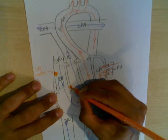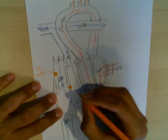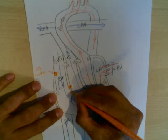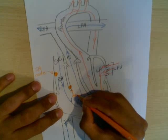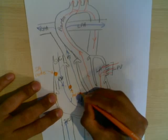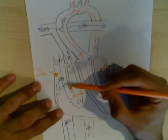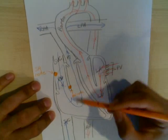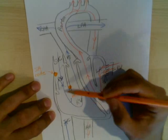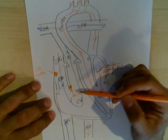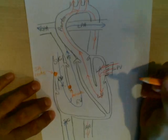Most of the books depict it as being around here, and that is the atrioventricular node. Makes perfect sense, because here we have an atrium — the right atrium — and here we have the ventricle, the right ventricle. So atrioventricular node, AV node, makes perfect sense.